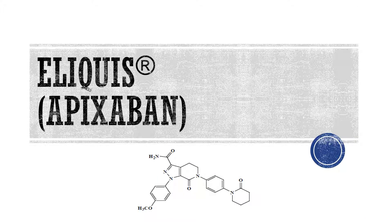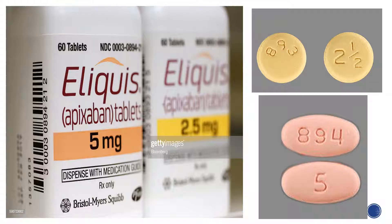Today I'll be talking about Eliquis, also known as apixaban. It's a factor Xa inhibitor and it comes as a white to pale yellow powder. Eliquis tablets are available for oral administration in strengths of 2.5 milligrams and 5 milligrams of apixaban.